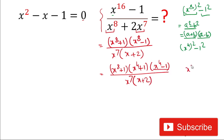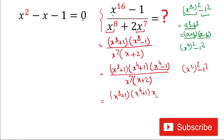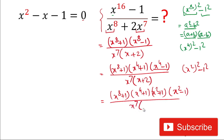Here again, x⁴ minus 1 is in the form of (x²)² minus 1², so we write it as (x² + 1)(x² - 1). The full expression becomes (x⁸ + 1)(x⁴ + 1)(x² + 1)(x² - 1), divided by x⁷ times (x + 2). Now we have the expression in simplified factored form.